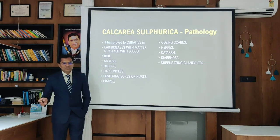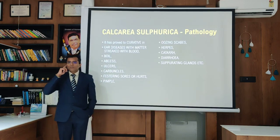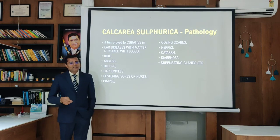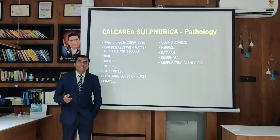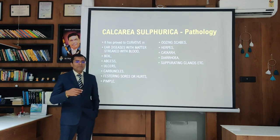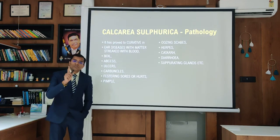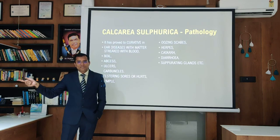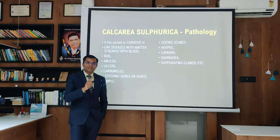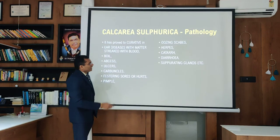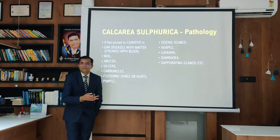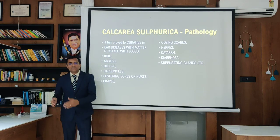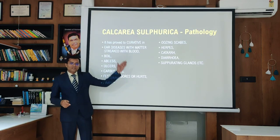Calcarea Sulphurica pathologies include otitis media with yellow pus mixed with blood, boils, abscess, ulcers, carbuncles, festering tendency, pimples, oozing scabs, and herpes with yellow pustular infections. If herpes discharge is transparent, Natrium Muriaticum is indicated; if yellow pustular, Calcarea Sulphurica is indicated. Also used in suppurating glands. In summary: Calcarea Fluorica relates to bone hardness; Calcarea Phosphorica to bone mineralisation and nutrition; Calcarea Sulphurica to skin suppuration with yellow discharge.